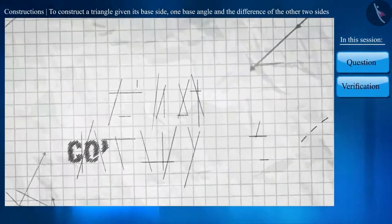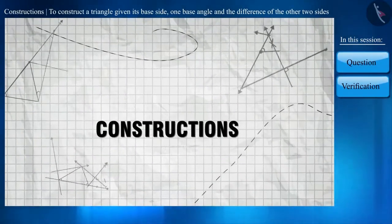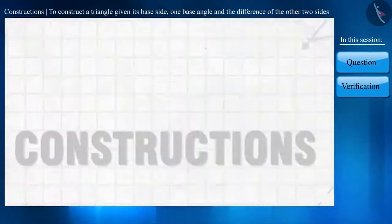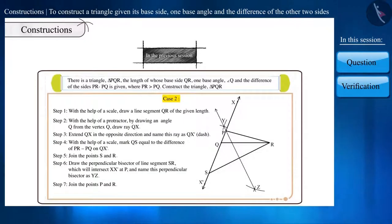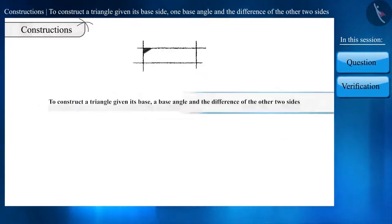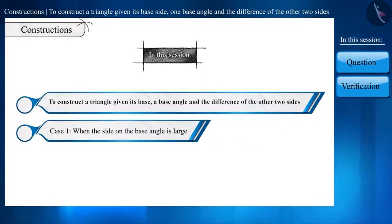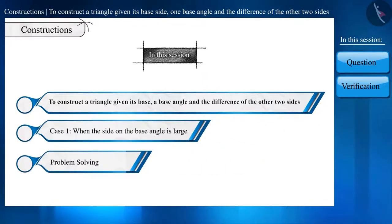Hello friends. Welcome to this video on constructions. In the previous video, with the given base side, one base angle and the difference of the other two sides, we learned the two cases for the construction of a triangle. Case 1, when the side on the base angle is large, and Case 2, when the side on the base angle is small. In this video, we will solve some questions based on the first case of these constructions.